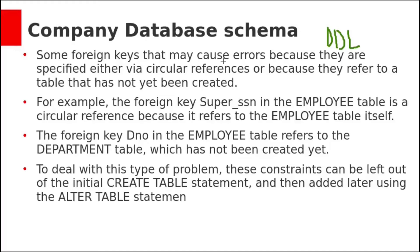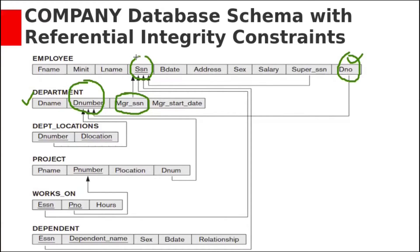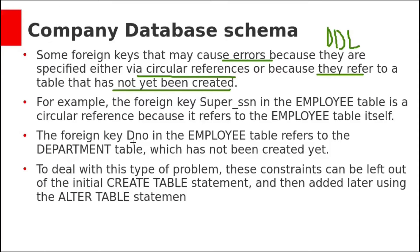While creating some foreign keys, that may cause errors because they are specified either via circular references or they refer to a table that has not yet been created. For example, if we take the employee table, the SSN is the primary key and the department number is the foreign key, which comes from the primary key of the department table. If you want to add this foreign key within the employee table, you need to create the department table prior to the employee table. Similarly, if you create the department table first, it has the foreign key MgrSSN which comes from the employee table. This is the circular reference. To deal with this kind of problem, these constraints can be left out in the initial creation of the table and then added later using the ALTER TABLE statement.